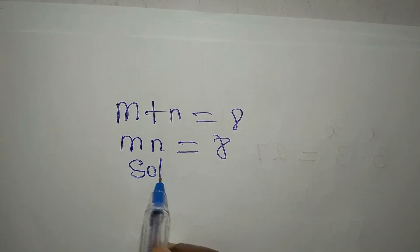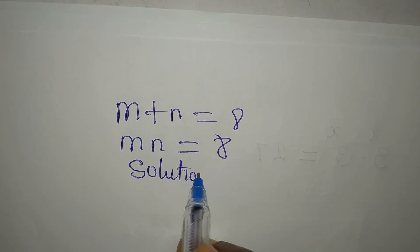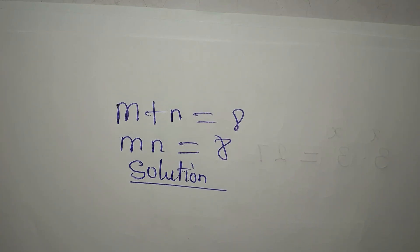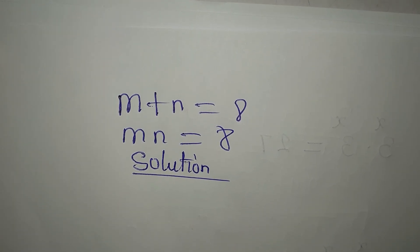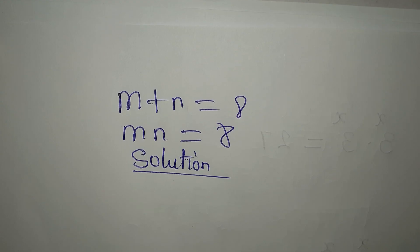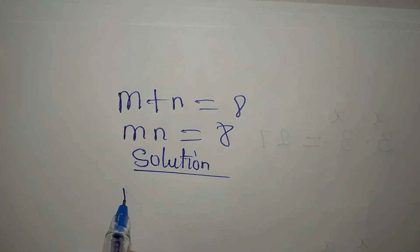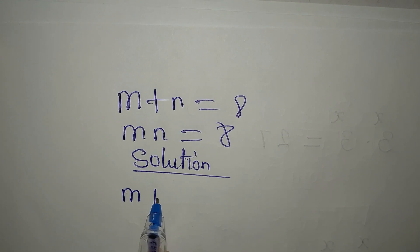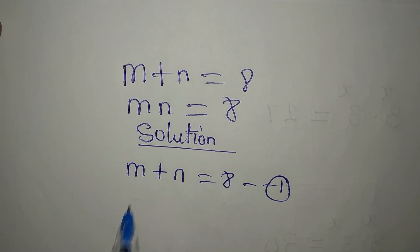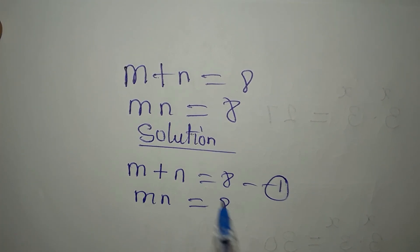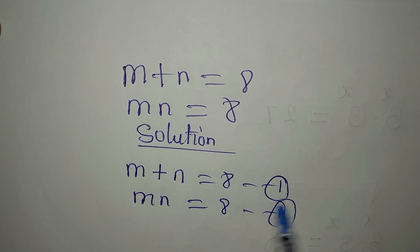Hello everyone, let's take a look at this very quickly. If you're new to this channel, subscribe, and if you're not new and have not subscribed, please subscribe so you can get more of this. So m plus n is equal to 8 — this is equation 1. Then m times n is also equal to 8, and this is equation 2.